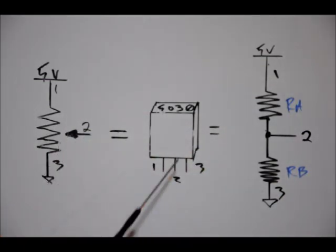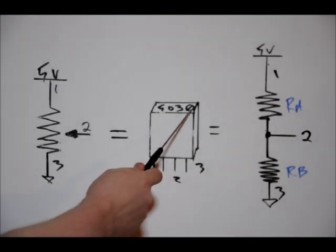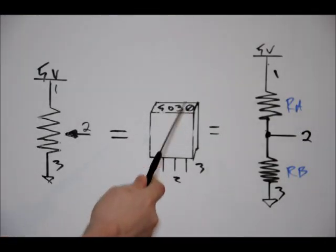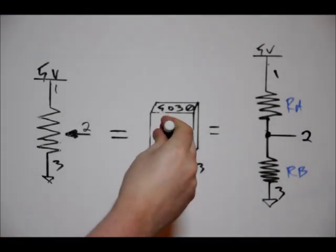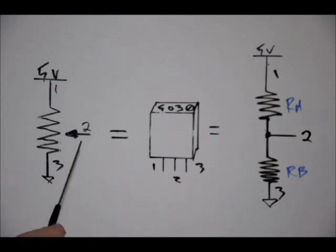And this is the kind of potentiometer we'll be using in our lab section of this video. It's a Bourne's potentiometer, three pins. There's a little tuning bar at the top. You use a tiny screwdriver to change the position of the wiper.